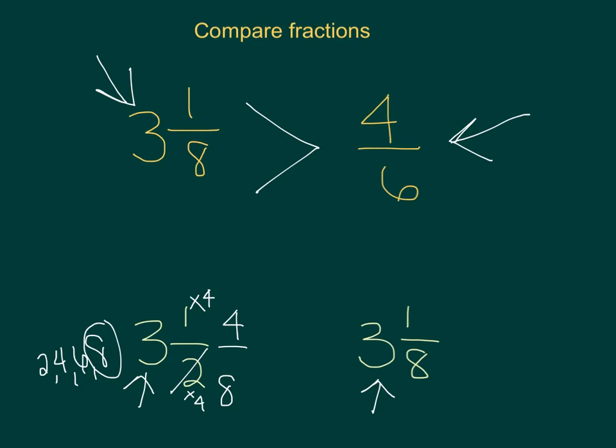So now my fractions are 3 and 4 eighths compared to 3 and 1 eighth. Well we know that 3 and 1 eighth is less than 3 and 4 eighths, so it's a less than.